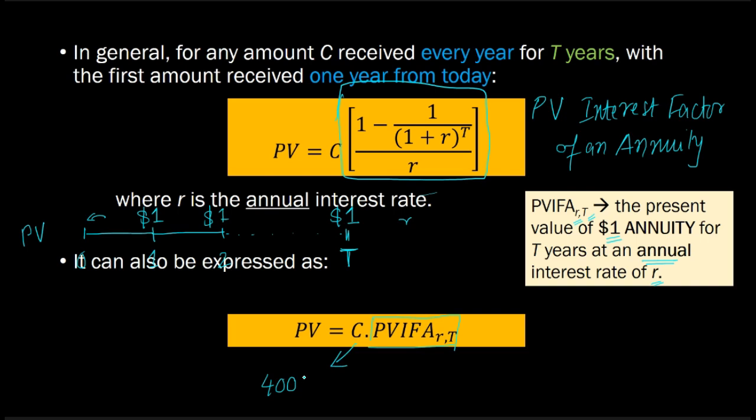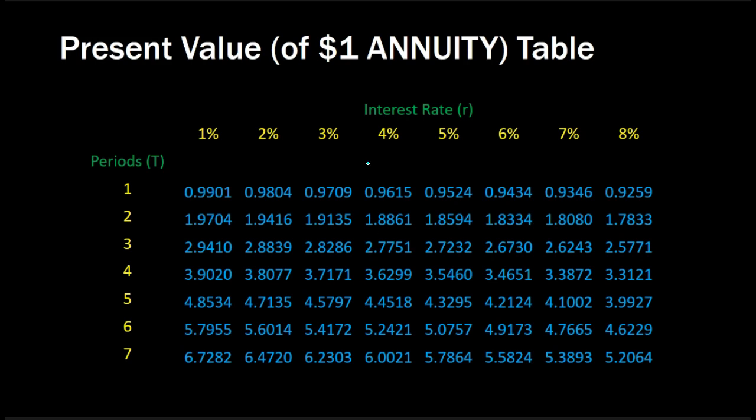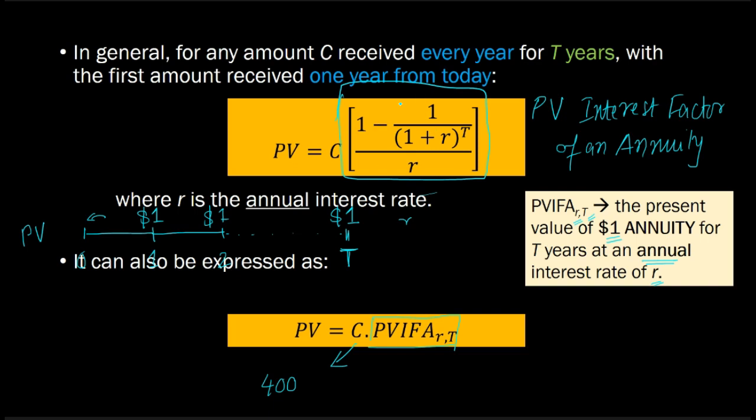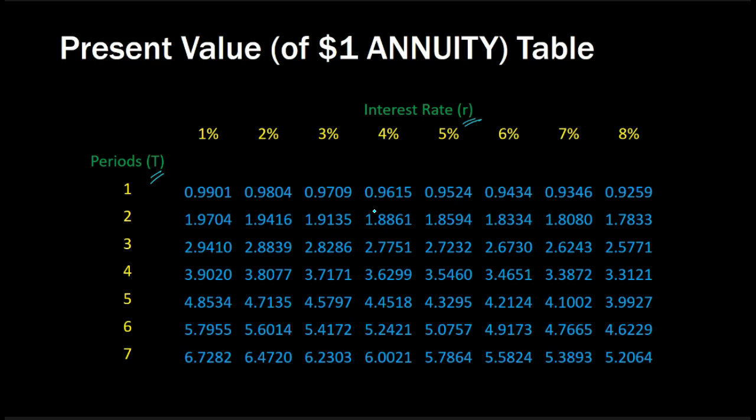You will often find that in your textbooks, you will have something called the present value of annuity tables or present value interest factor of annuity tables. As you have seen, if you know the interest rate R and the number of time periods T, then you can get a numerical value for this PVIFA. That is what is shown in these tables.